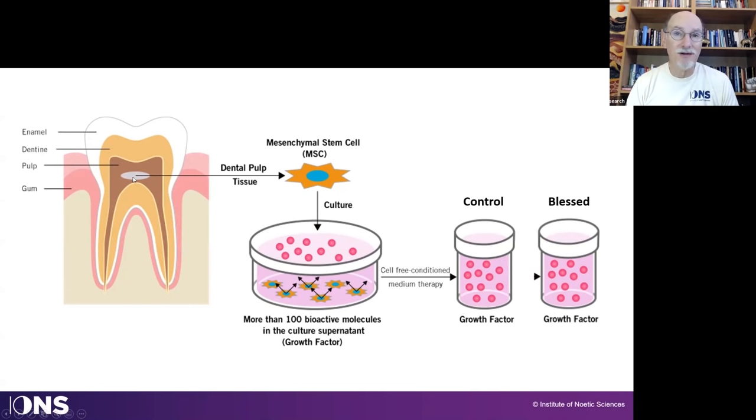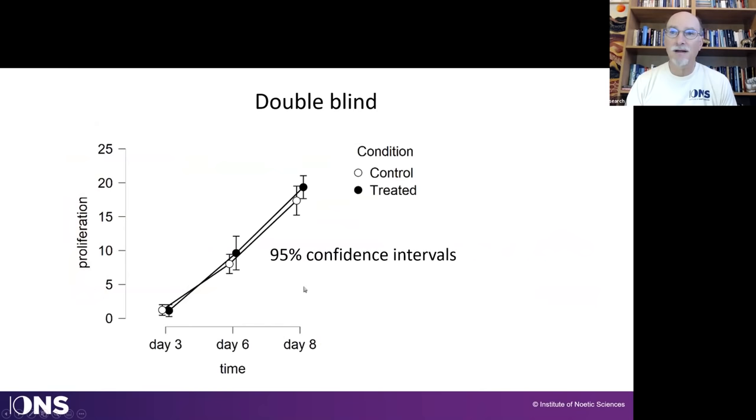So the source of the stem cells is dental pulp. Take a tooth out of a person, extract the pulp. You can create stem cells out of that, and you put it into a medium, some of which was using control water to grow the stem cells and others using blessed water. And this doesn't look quite as dramatic as what we saw on the plants, but nevertheless, if you look at by day six and by day eight on these experiments, again, 95% confidence intervals, it is, in fact, a statistically significant difference.